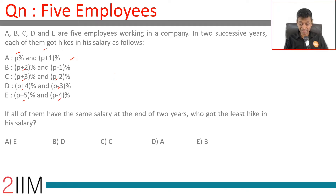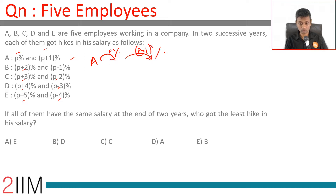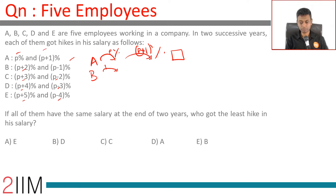If all of them have the same salary at the end of two years, who got the least hike in salary? So A gets p% then p+1% hike; B gets p+2% then p-1% hike — and both lead to the same new salary.